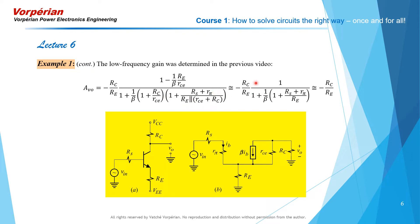A similar approximation holds in the denominator, and to a first approximation we get a simplified expression. If beta is very large, we can further approximate by ignoring one term relative to unity, giving the ideal gain R_C over R_E for this circuit.